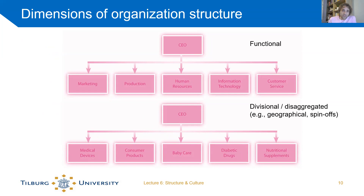In a functional structure, the organization is split according to function. For example, in a university, you have scientific staff who teach and do research, and support staff divided into IT, marketing, human resources, finance, and others. That's a functional division within the organization.